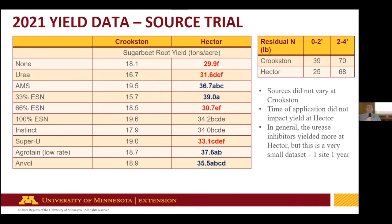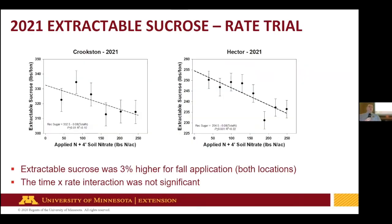At the Hector site, ANVOL was near the top along with 33% ESN. That 33% ESN is normally what I would suggest for a split if anybody's going to use it. Last year I really expected that 100% ESN to be closer to the control just because we didn't have water — that product needs temperature and moisture in the soil to release nitrogen. Higher percent of ESN just wasn't going to work last year with the dry conditions.